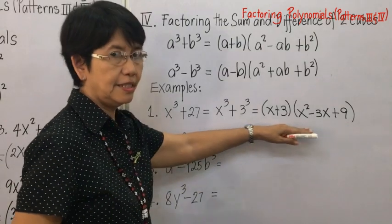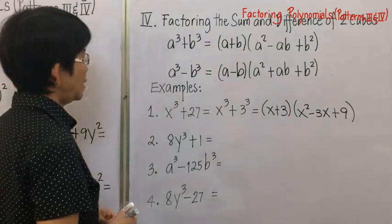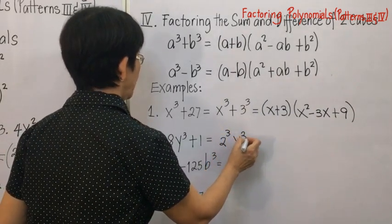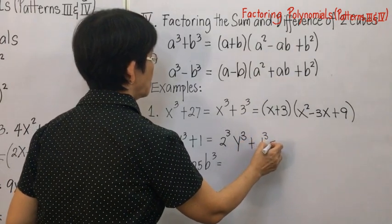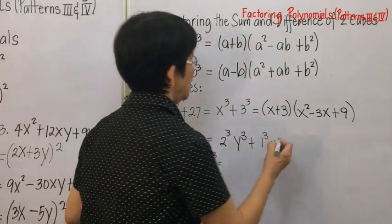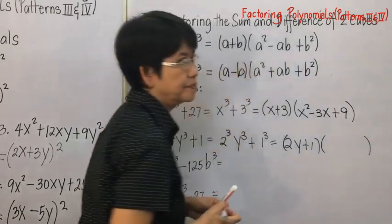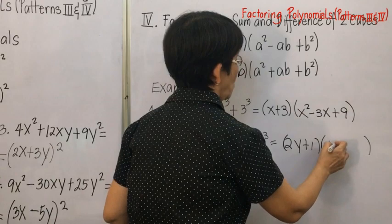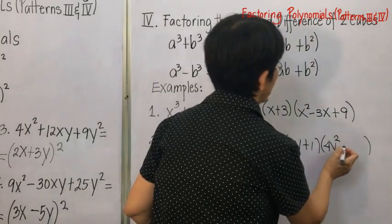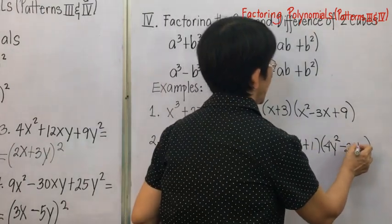Number two: 8y cubed plus 1. Since 8 is 2 cubed, rewrite as 2y cubed plus 1 cubed. Factor to get the first factor 2y plus 1. The second factor: square the first term to get 4y squared, then opposite sign gives minus, then multiply 2y and 1 to get 2y, then square the last term to get plus 1. Answer: 2y plus 1, times 4y squared minus 2y plus 1.